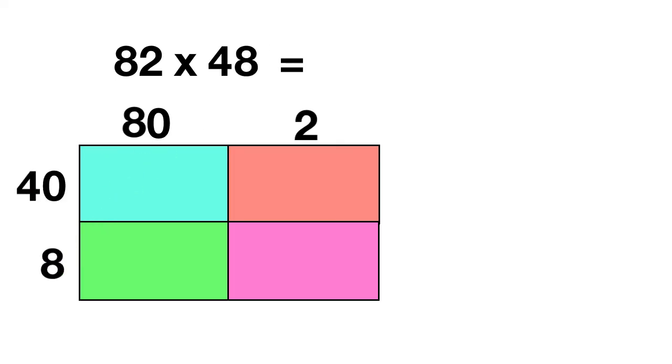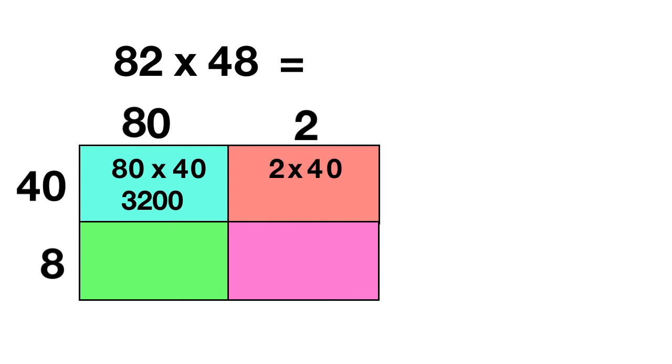You could then multiply 80 times 40. When you do this, 8 times 4 is 32, and you need to add 2 zeros, 3,200. Then you could do 2 times 40. 2 times 4 is 8, and you add 1 zero, 80. In the green box, you do 80 times 8. Well, 8 times 8 is 64, and we add 1 zero, 640. Finally, in the purple box, we do 2 times 8, and 2 times 8 is just 16.